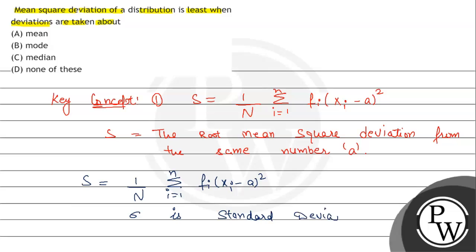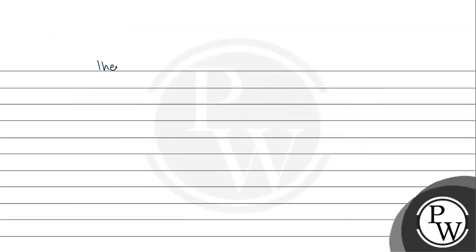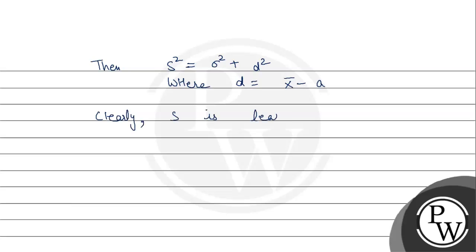Sigma is the standard deviation. Then we can say that s squared equals sigma squared plus d squared, where d equals x-bar minus a. Now from here, clearly s is least when d equals 0. When d equals 0, from d equals x-bar minus a equals 0, we get x-bar equals a.